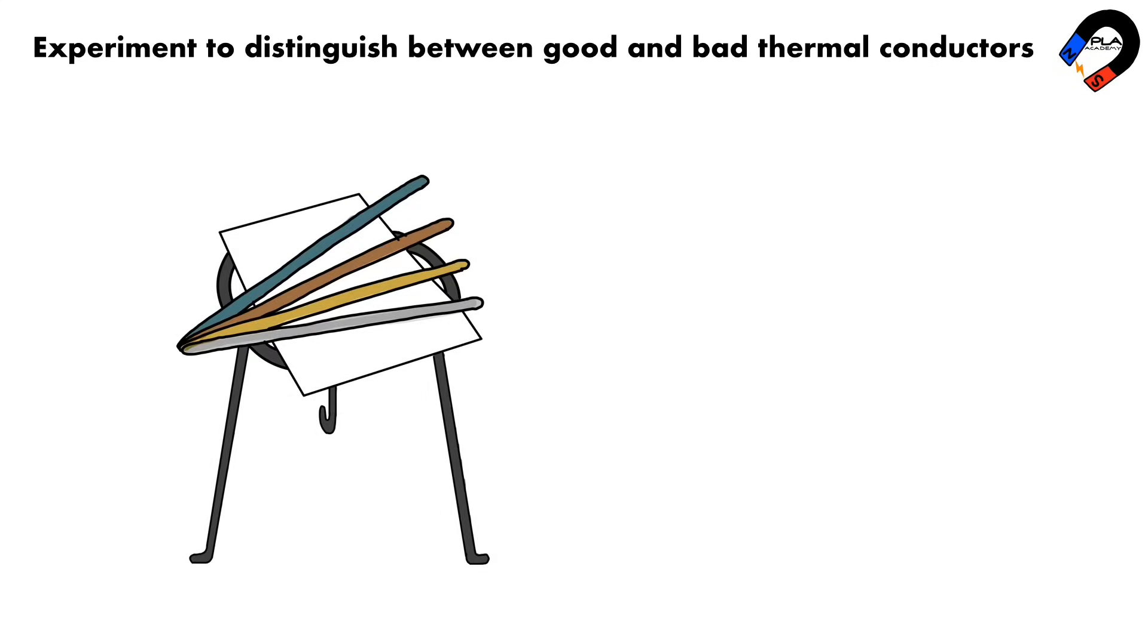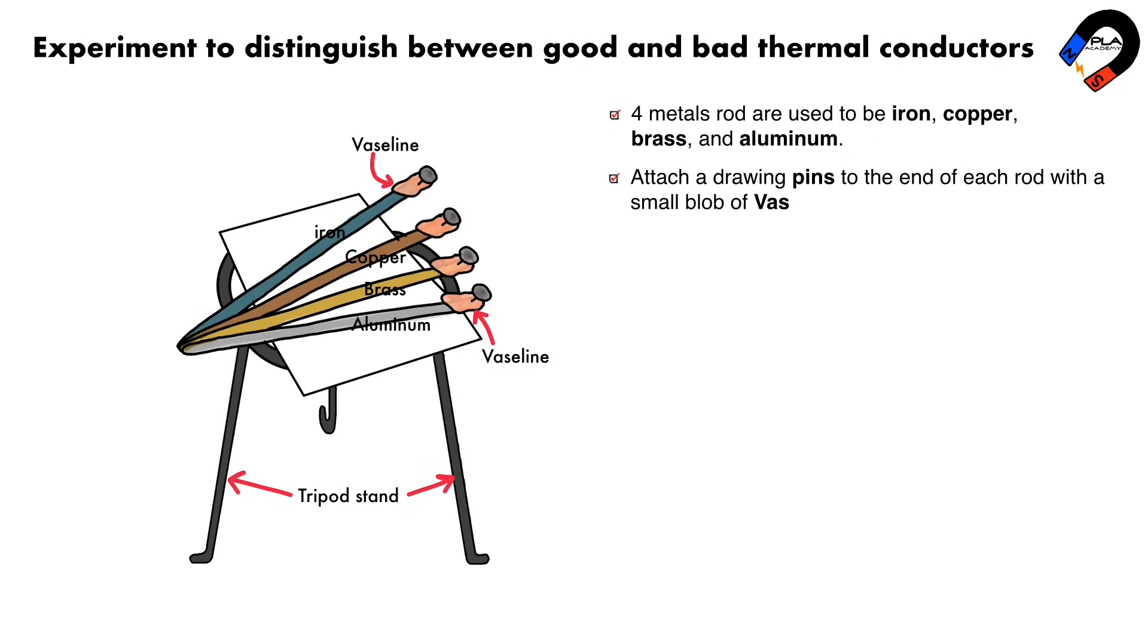Set up the apparatus as shown in the diagram. Four metal rods are used to be iron, copper, brass, and aluminum. Attach a drawing pin to the end of each rod with a small blob of Vaseline. The ends of the rods without the drawing pins should be brought together so that they can be heated equally.